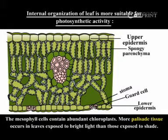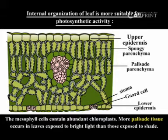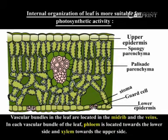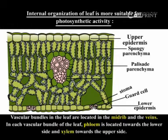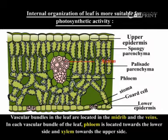More palisade tissue occurs in leaves exposed to bright light than those exposed to shade. Vascular bundles in the leaf are located in the midrib and veins. In each vascular bundle of the leaf, phloem is located towards the lower side and xylem towards the upper side.